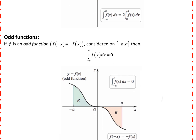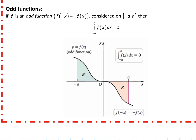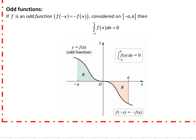Odd functions are even nicer to work with because of the way their symmetry works out. Remember that an odd function is symmetric through the origin, such that f of negative x equals negative f of x. It turns out that if we look at an odd function and we're calculating the definite integral across negative a to a, an odd function is going to be exactly 0, because the same amount of area is going to be above the x-axis as below. A definite integral represents the net area, so the net area is going to be 0.